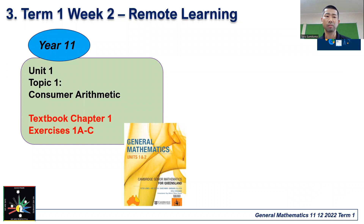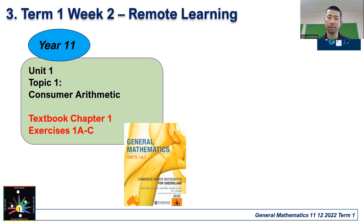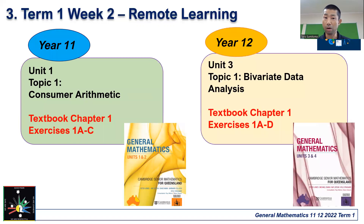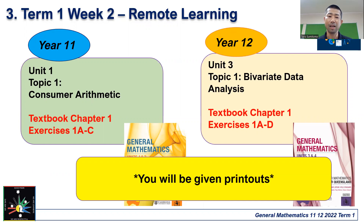We'll be going through the textbook. Year 11s, you'll be going through unit one — the first topic is consumer arithmetic — and I want you to go through textbook chapter one, exercises 1A to 1C. Year 12s, you'll be doing unit three, topic one, bivariant data analysis, and I want you to do textbook chapter one, exercises 1A to 1D. You will be given printouts of the textbooks.